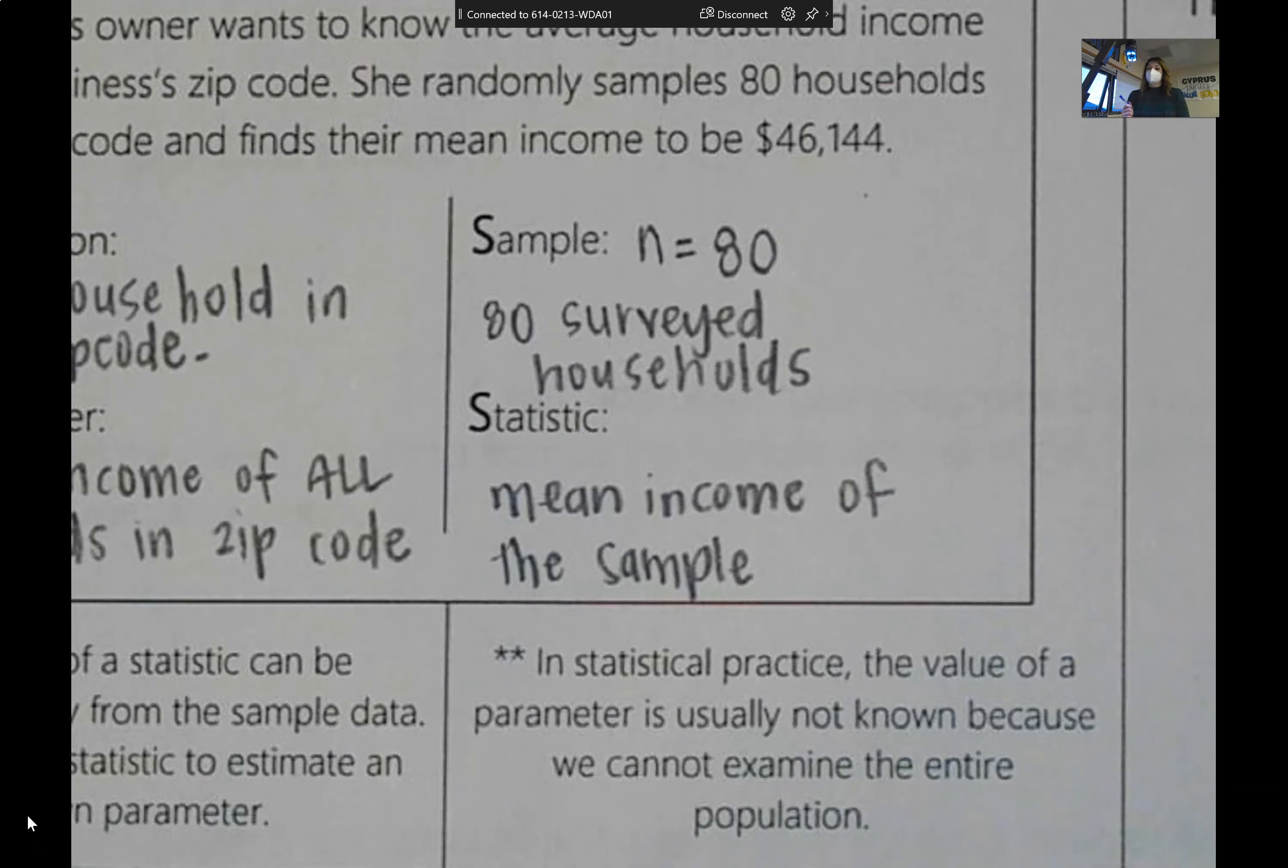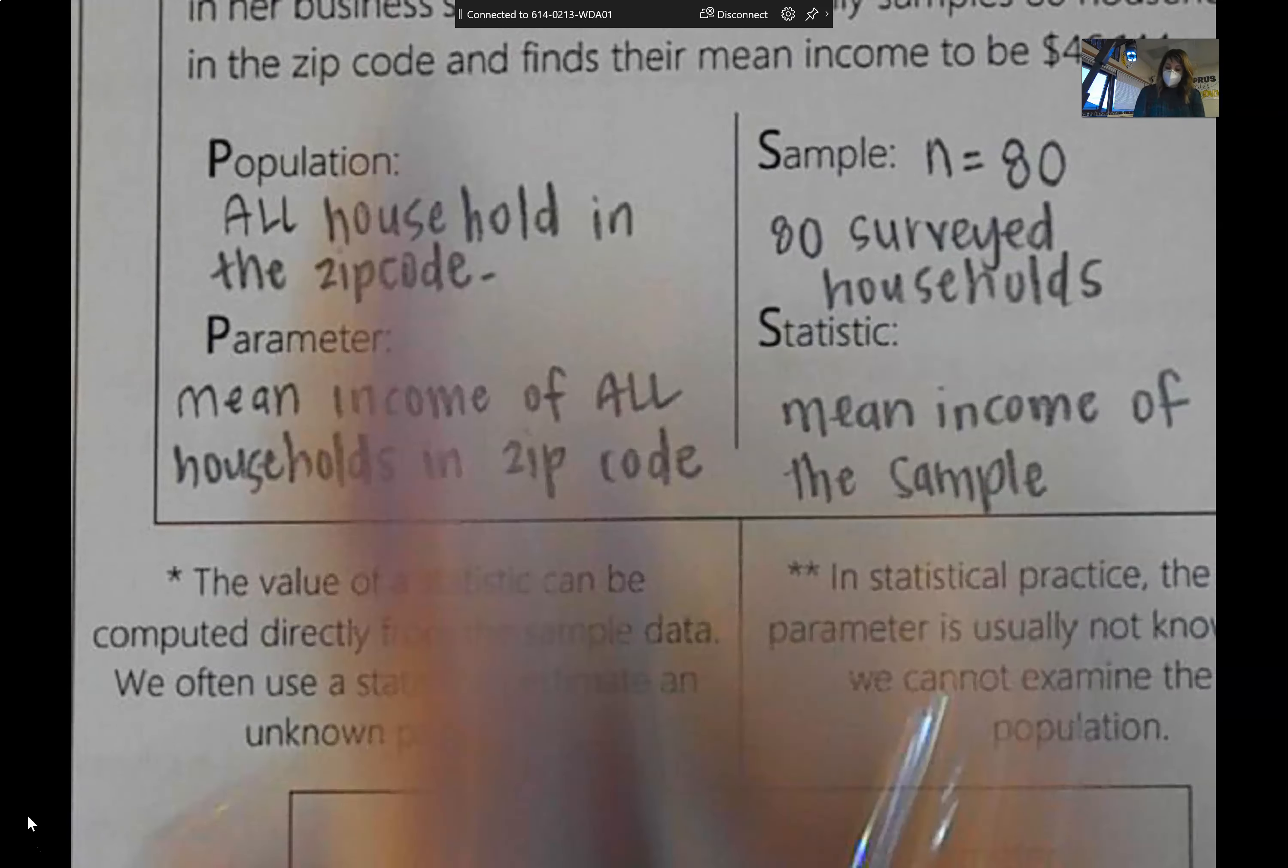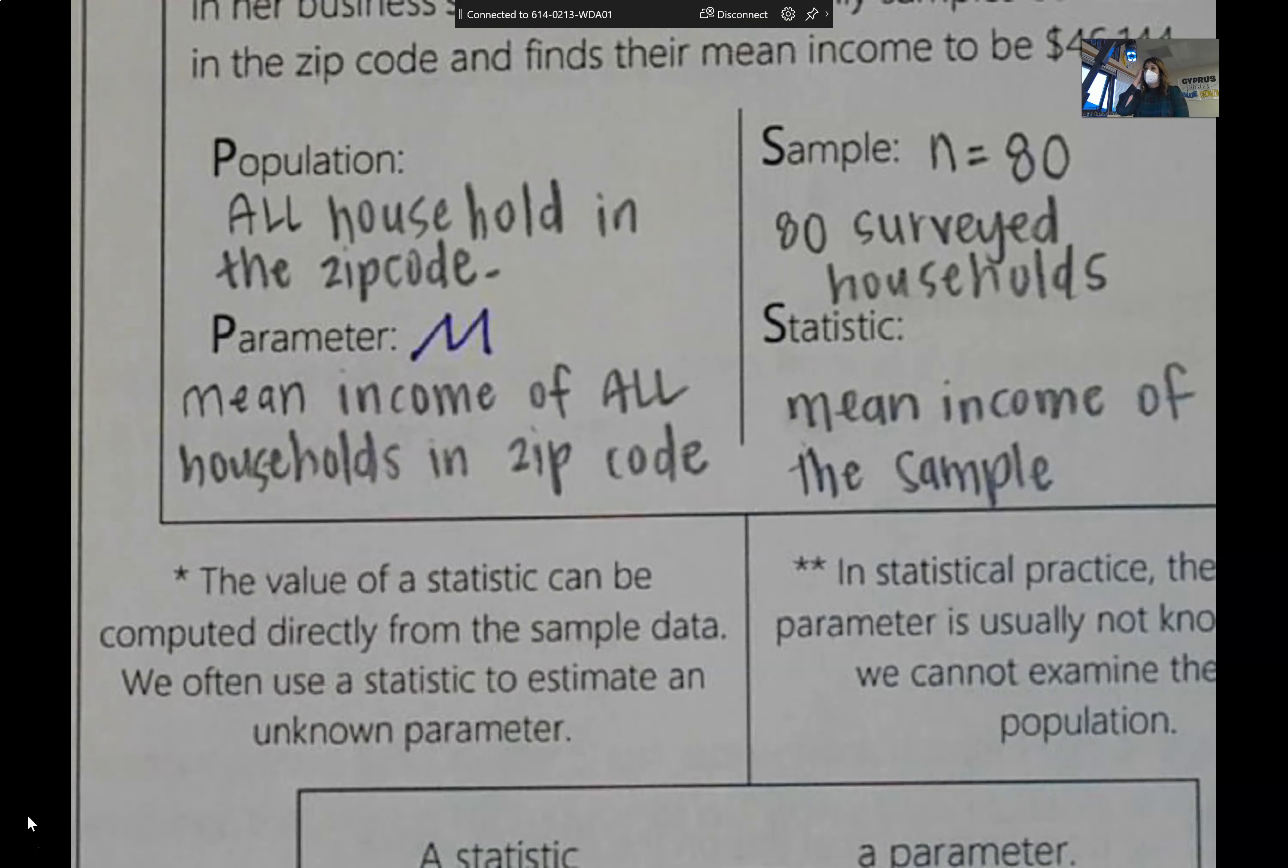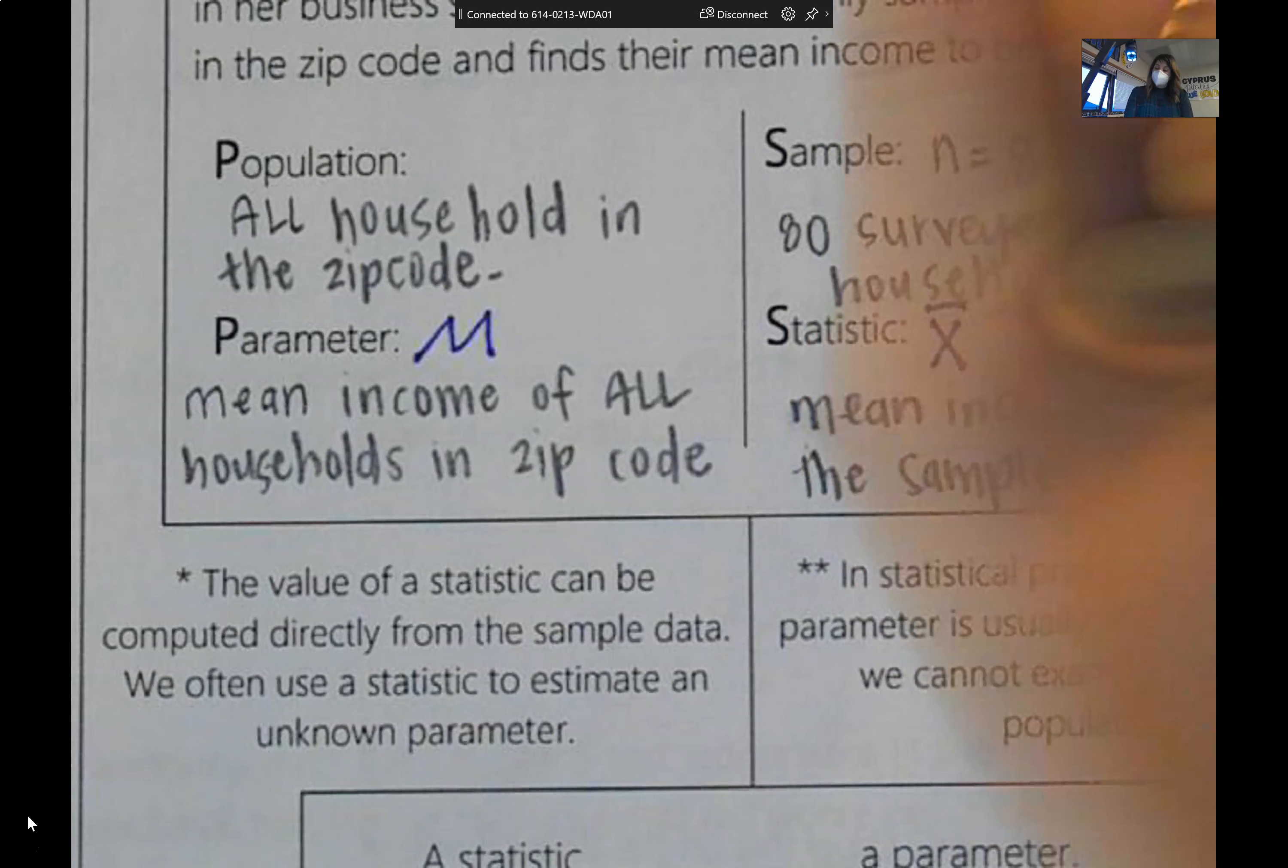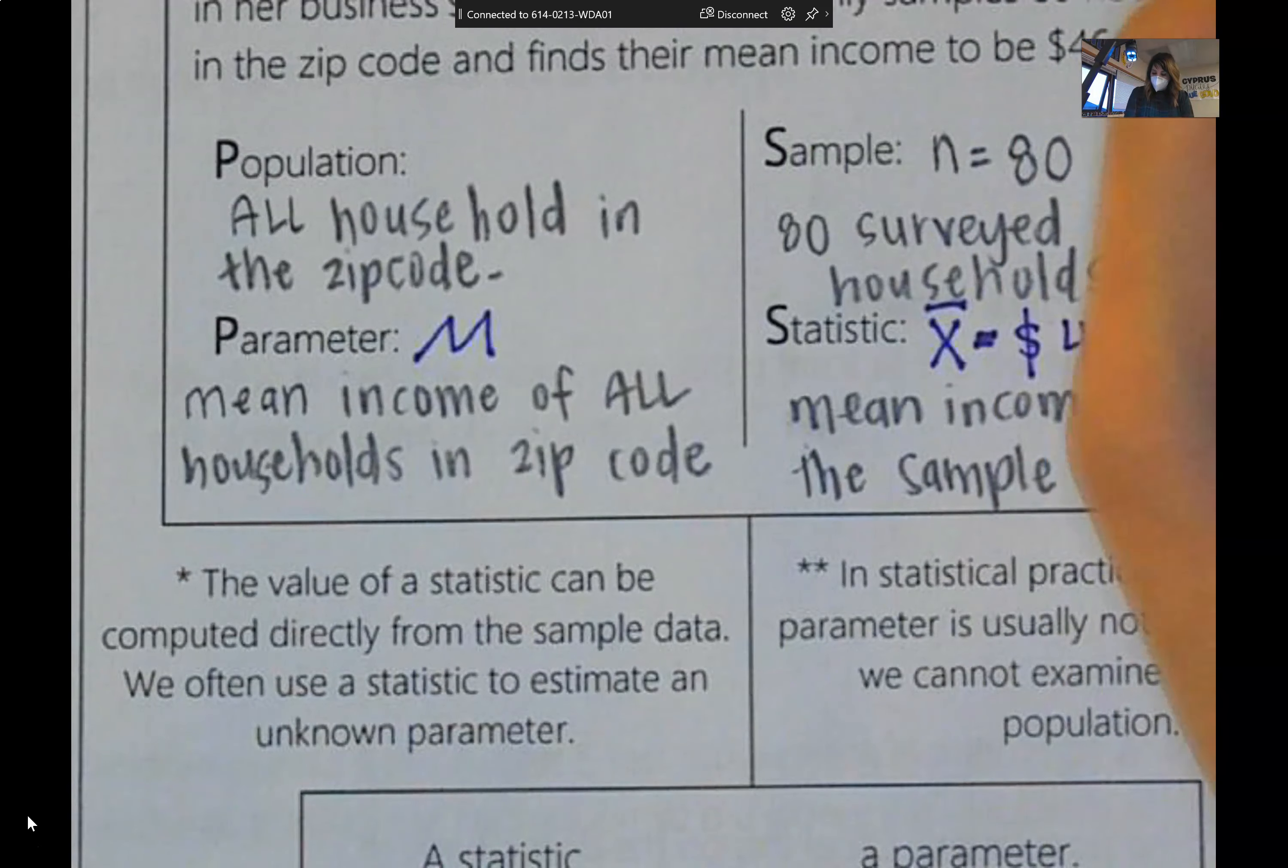So we're going to use the mean income of the 80 households to estimate the mean income of the entire population. So the last element of this that is really important is the symbols that we are supposed to use for these parameters and statistics. So when we talk about a population mean, we write down mu. So this guy next to parameter would be mu. Back from our normal unit, when we said we have a normal distribution of mu and sigma, it's that same mu. The statistic is x bar. And in this case, x bar was equal to 46,144.